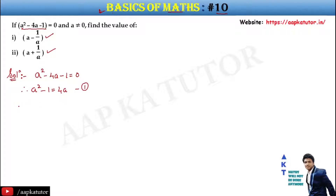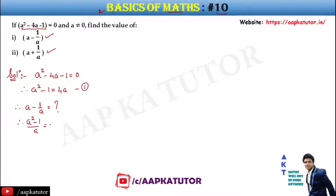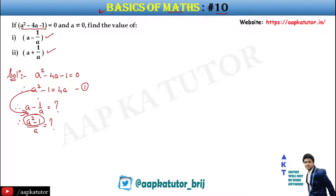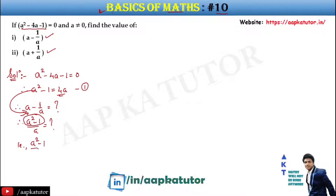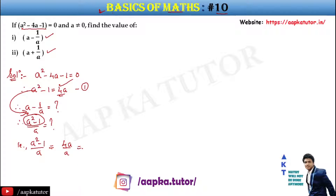Now we need to find a minus 1 upon a. We can write this as a squared minus 1 upon a. Since a squared minus 1 equals 4a, this becomes 4a upon a, which equals 4. So therefore, a minus 1 upon a is equal to 4.